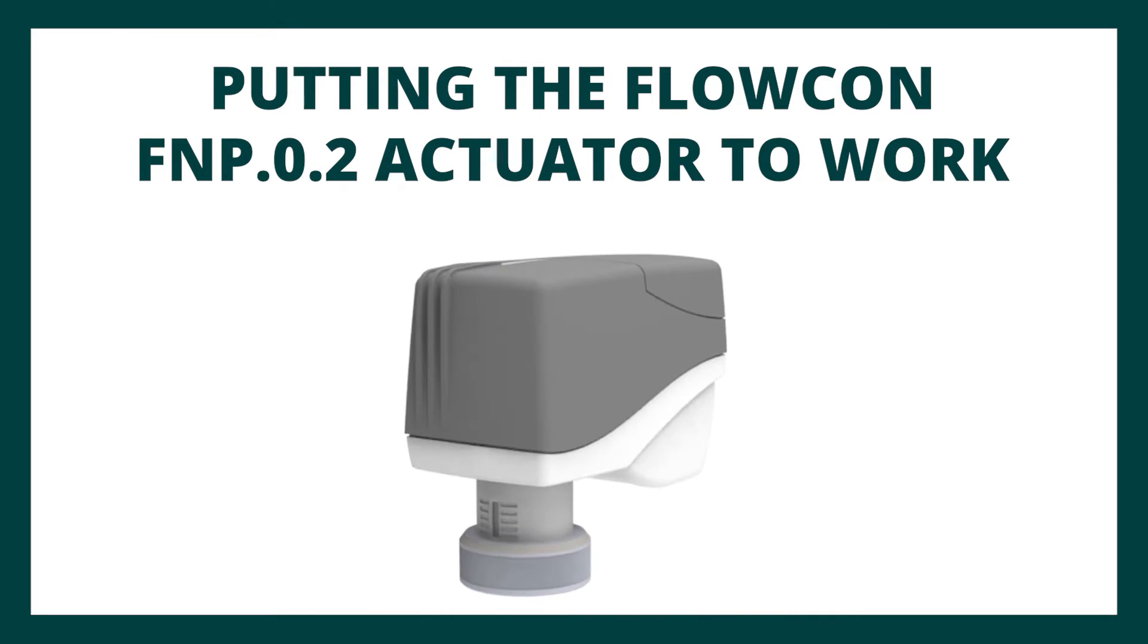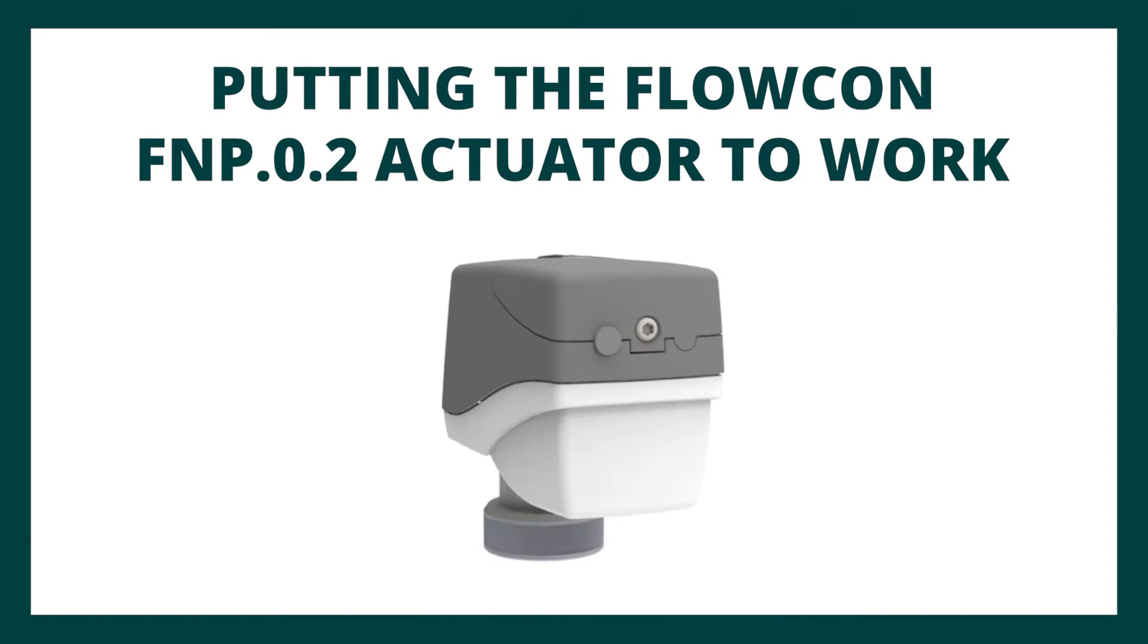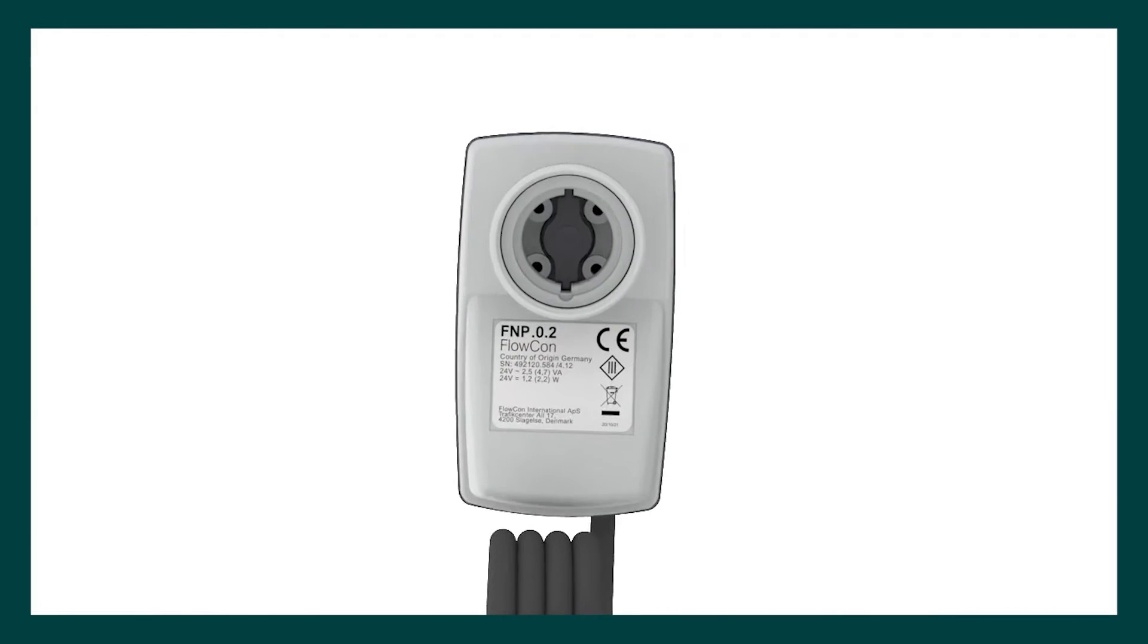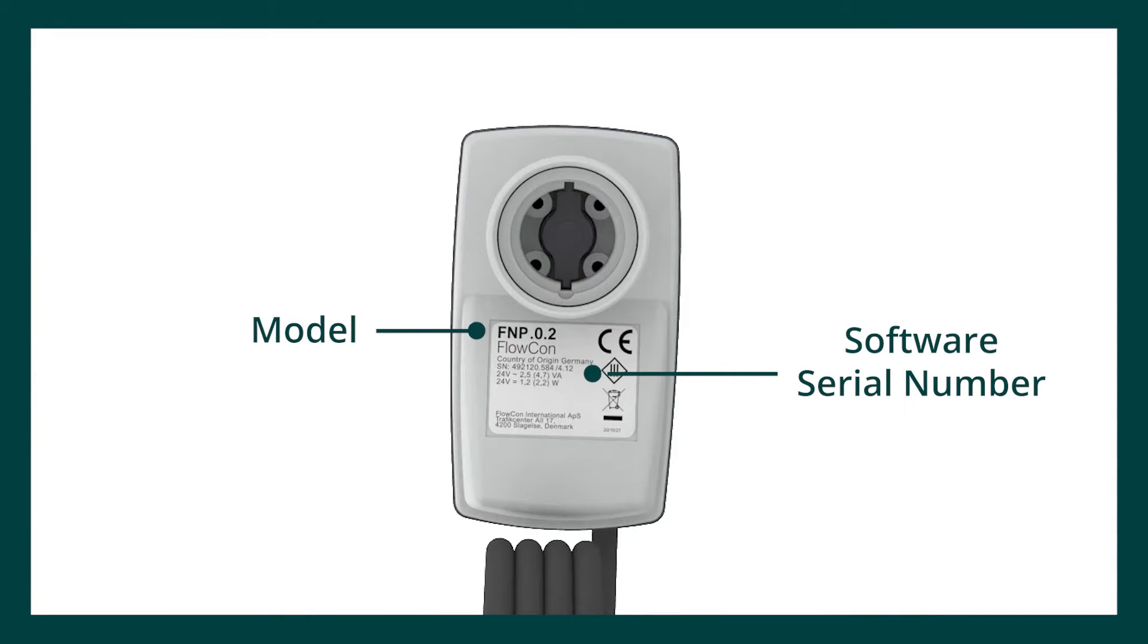The self-calibrating Flowcon FNP0.2 electric actuator is designed for 24V AC-DC with a 10% tolerance and 50 or 60Hz supply with an analogue 0-10V or 2-10V DC signal.